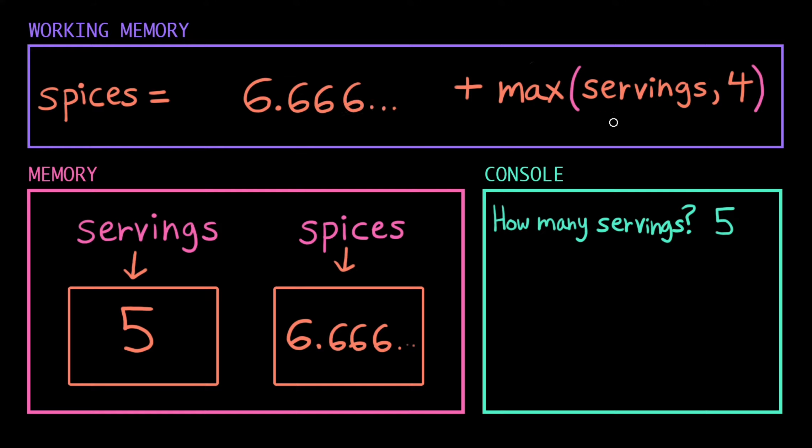Now it jumps to the next set of parentheses. Substituting the value of servings, that's five, two single values, pops outside the parentheses, sees that it wants to take the maximum. Five is greater than four, and now we just have two numbers to add together.